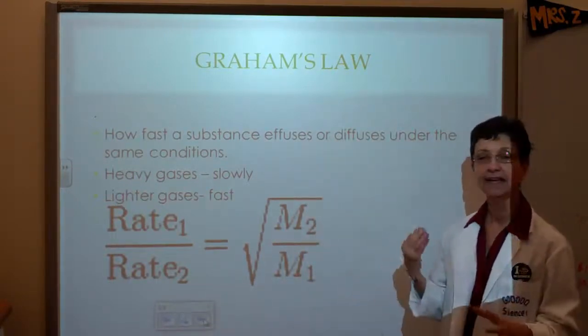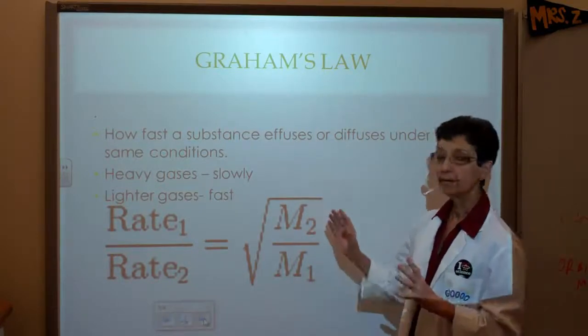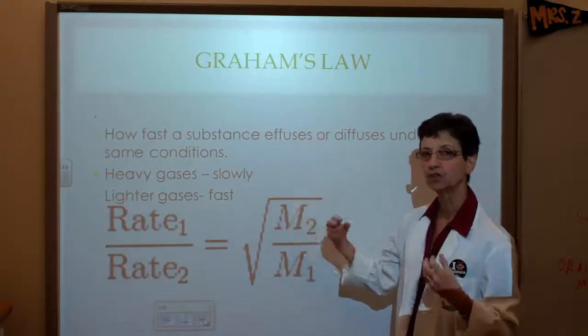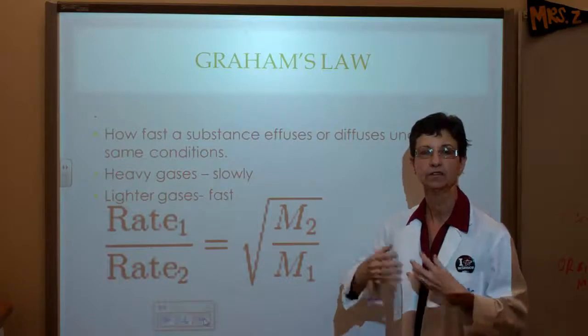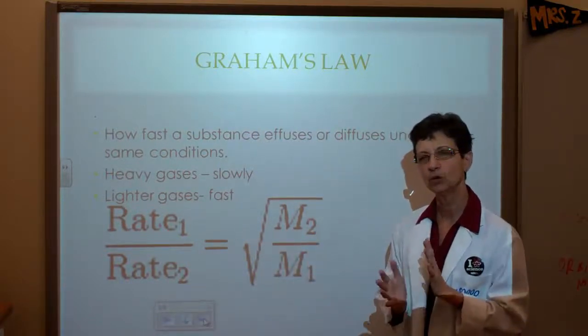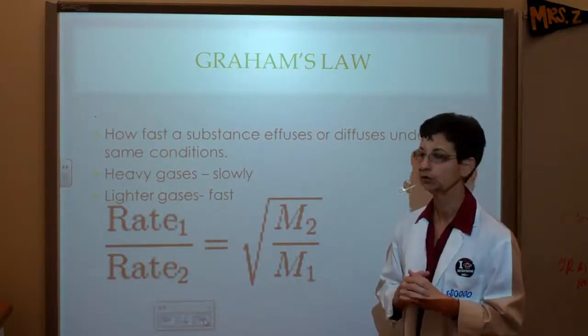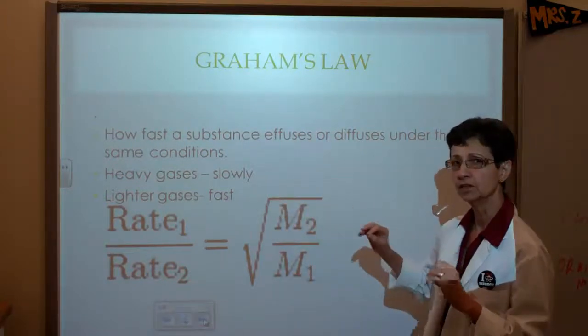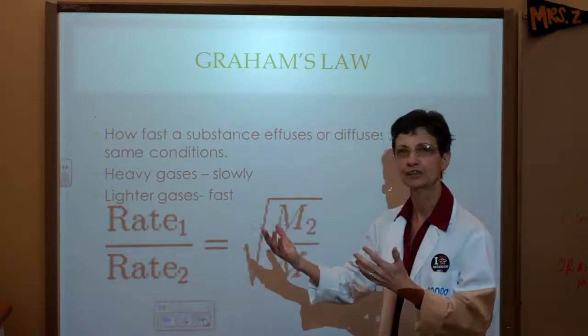Now, we're going to go ahead and apply Graham's Law and Dalton's Law. Graham's Law is basically going to help us to determine the rate of diffusion, how quickly a substance diffuses from one point to another. It was based on original effusion, but it can also be applied to diffusion of gases. Heavy gases move slowly. Lighter gases diffuse faster.